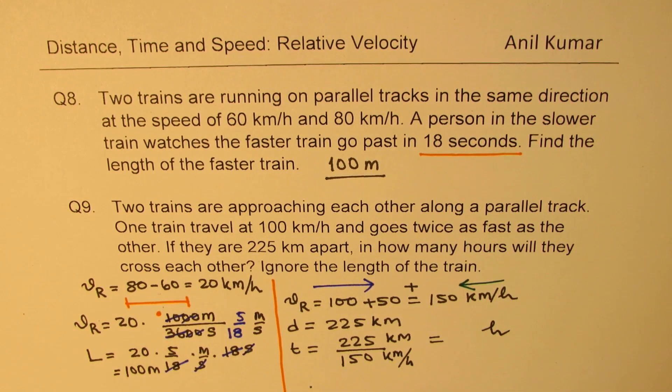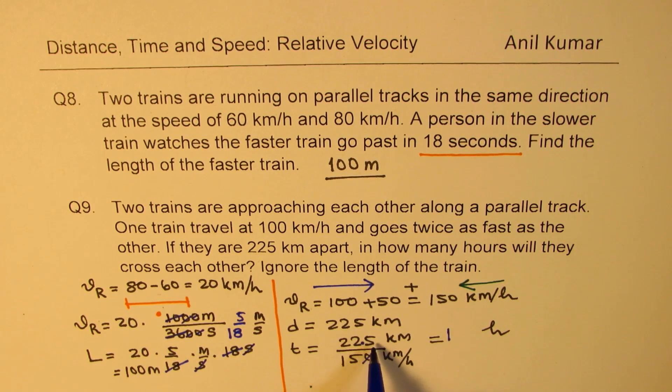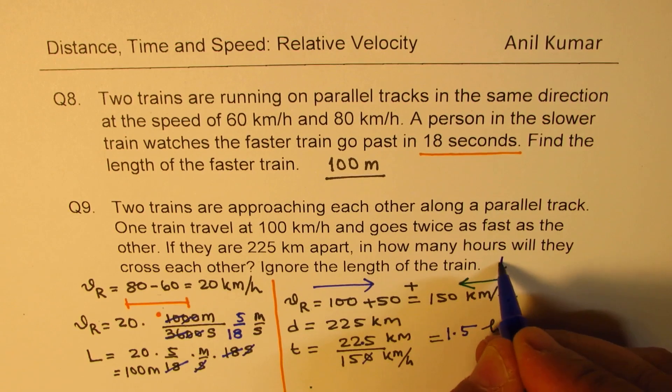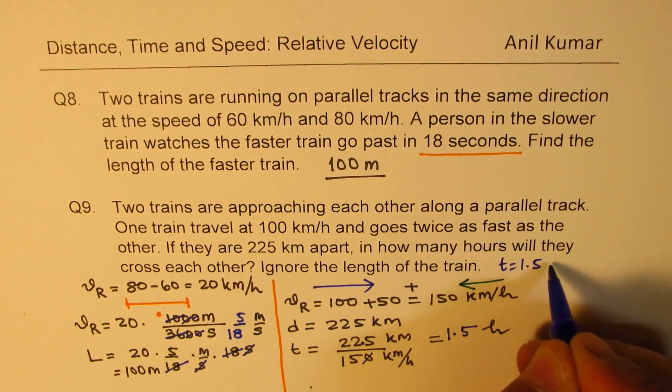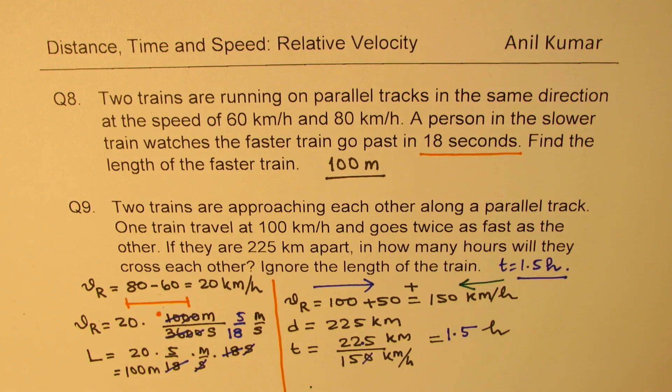We can do this division. Let's put this decimal here, and then we can divide by 15. 15 goes one time, and then you get 75, and 15 goes five times. So we get 1.5 hours. So the time t equals to 1.5 hours. That is how it can be answered.